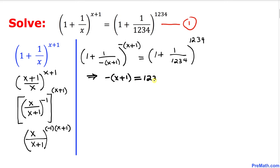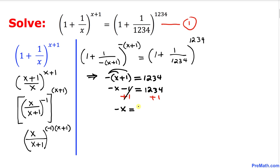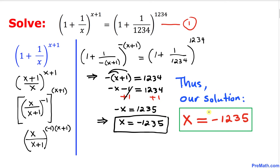Let's distribute the negative sign: this becomes negative x minus one equals 1234. So we have negative x equals 1235. Switching the sign, our x is going to be negative 1235. That is our final solution — x equals negative 1235.